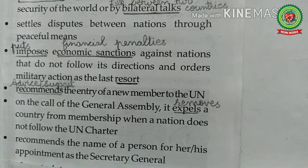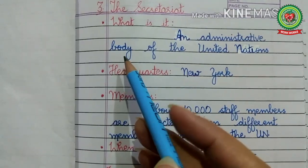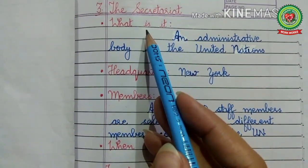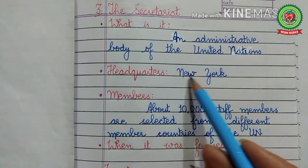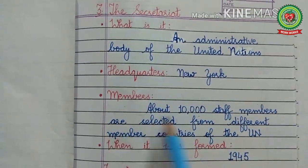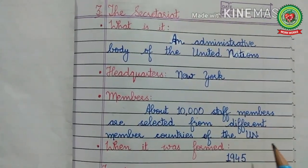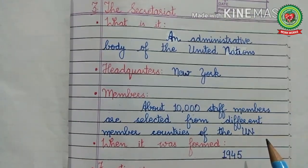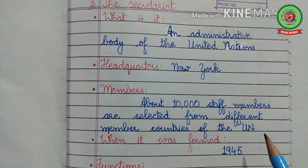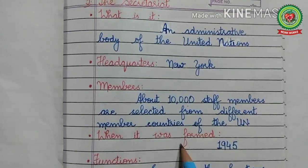Now let us discuss the Secretariat. What is the Secretariat? The Secretariat is an administrative body of the United Nations. Headquarters: located in New York City, United States of America. Members: about 10,000 staff members are selected from different member countries of the UN. As international employees, they take an oath that they will not receive any instructions from their own country — they work under the guidance and command of the Secretary General and help the United Nations carry out its responsibilities as best as possible. When it was formed: 1945.